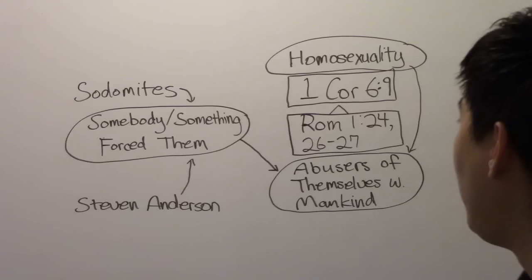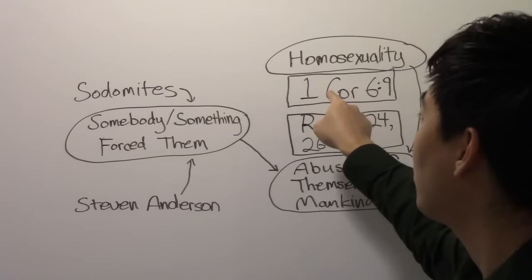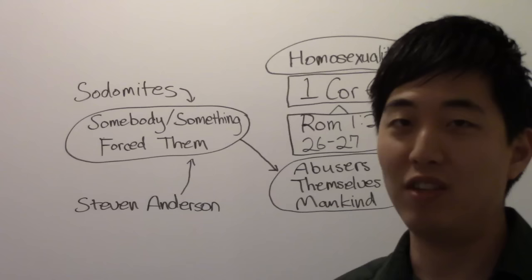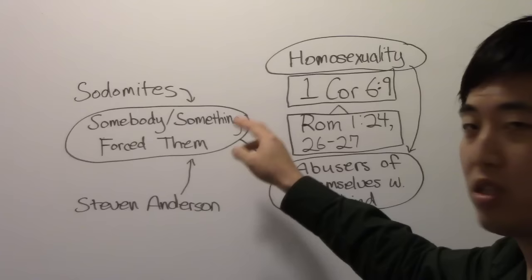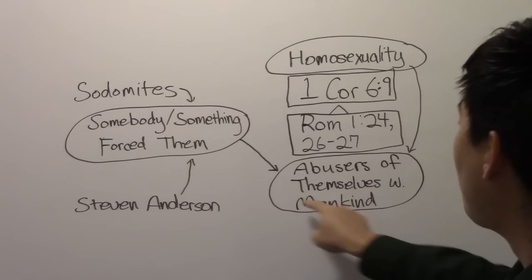Now the Sodomites, they don't like this verse. So I guarantee you, if you haven't seen it before, then you have not done street preaching, which is not a surprise because Stephen Anderson has never done it. He's against it. But when you're street preaching or witnessing or door knocking and you use this verse against homosexuals, the Sodomites are going to reinterpret this part: abusers of themselves with mankind.